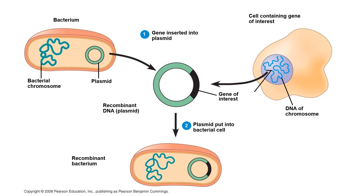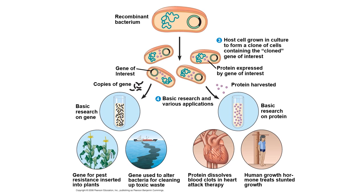We can take a piece of DNA and insert it into the plasmid of a bacterium. Because the genetic code is universal, we don't have any problems. We can put that plasmid back into the bacterium, and every time the cell divides, it makes copies of the DNA as well — every time the bacterium divides, it clones that DNA. The word 'clone' is used in a few different ways. When I say we're cloning a piece of DNA, I just mean we're copying it. Cloning an organism is a different thing, which we'll talk about in our next topic.